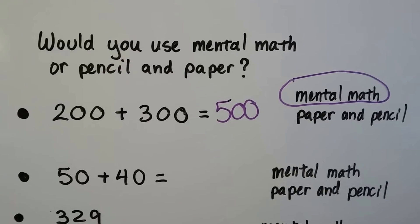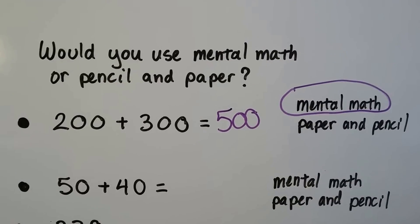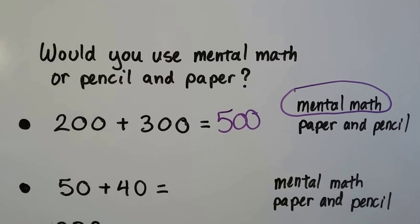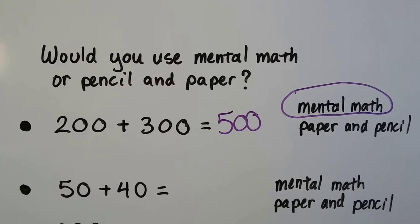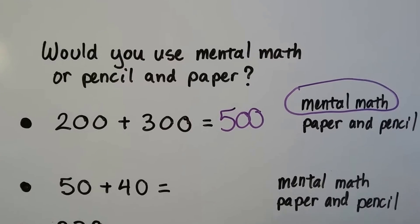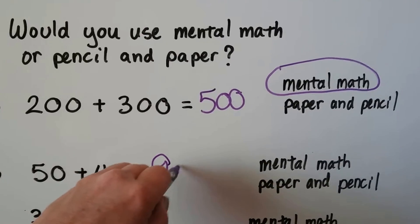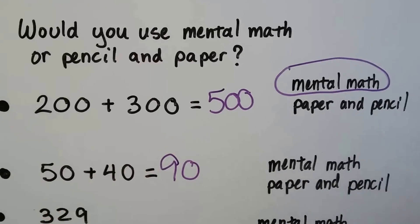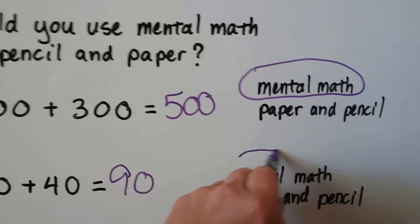How about 50 plus 40 - would you have to use pencil and paper or could we use mental math? Well, 50 plus 40 is five tens plus four tens. That's like five plus four with a zero - five plus four is nine, and there's a zero in the ones place, so it's 90. We could use mental math for that one.